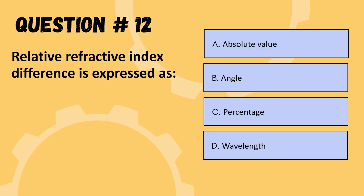Next question: relative refractive index difference is expressed as — options are absolute value, angle, percentage, or wavelength. The correct option is C: percentage.